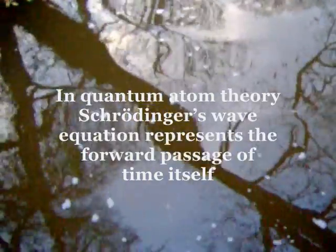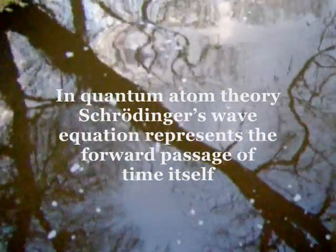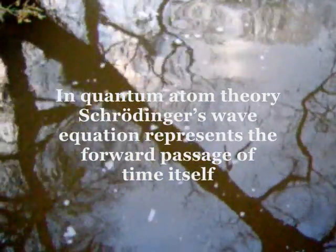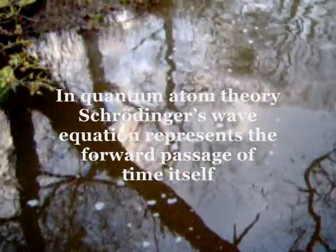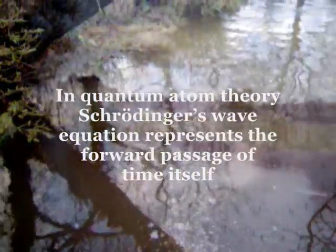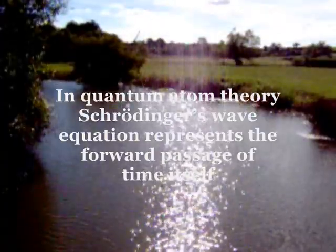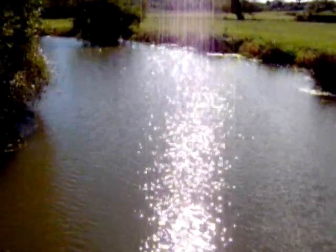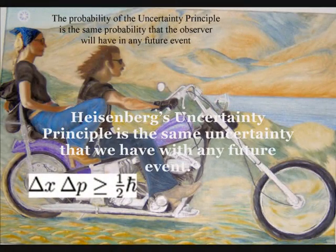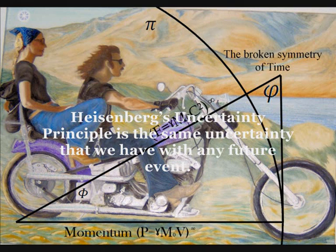Quantum atom theory is based on two simple ideas. The first is that the wave equation does not just predict what the wave function will be in the future, but that this process represents the forward passage of time itself, photon by photon, or moment by moment. The second idea is that Heisenberg's uncertainty principle is the same uncertainty that we have with any future event.